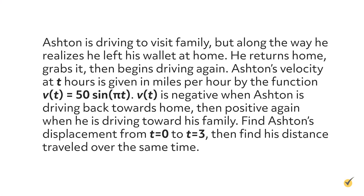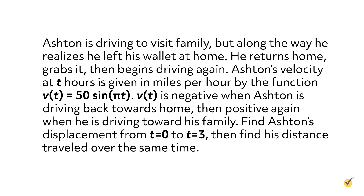Let's put this new knowledge to work on a velocity problem. Ashton is driving to visit family, but along the way he realizes he left his wallet at home. He returns home, grabs it, then begins driving again. Ashton's velocity at t hours is given in miles per hour by the function v(t) = 50 sin(πt). V(t) is negative when Ashton is driving back towards home, then positive again when he's driving towards his family. Find Ashton's displacement from t = 0 to t = 3, then find his distance traveled over the same time.